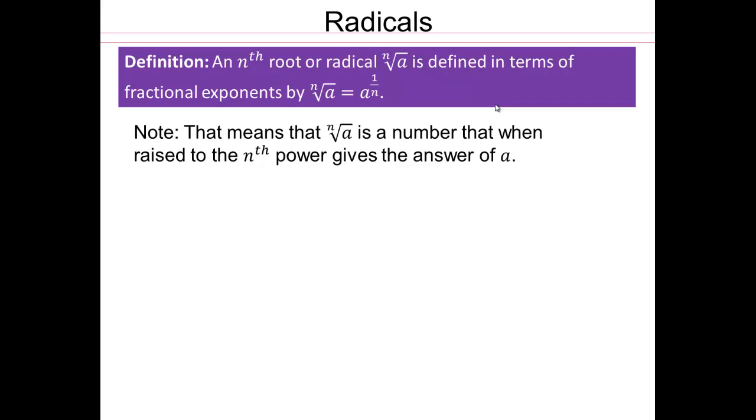That's what the nth root represents. One note we would like to make is that if this n is 2, then we leave the 2 out. But if it's 3, 4, 5, any other counting number, then we put it there. So when you have square root, the 2 is left out. So for example, if I wanted square root 25, you're looking for something squared giving you 25 and that would be 5. Cube root 64 is going to be 4 because 4 cubed is 64.